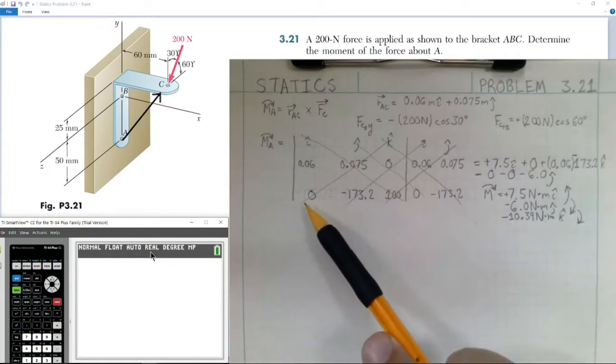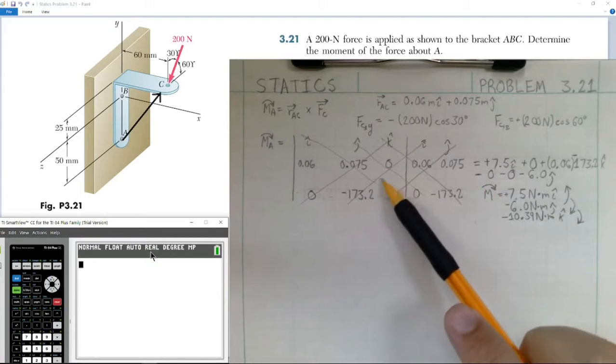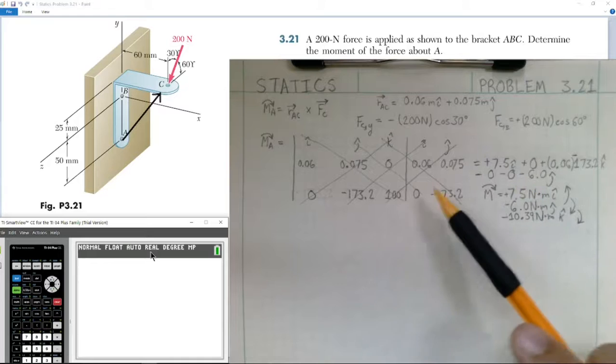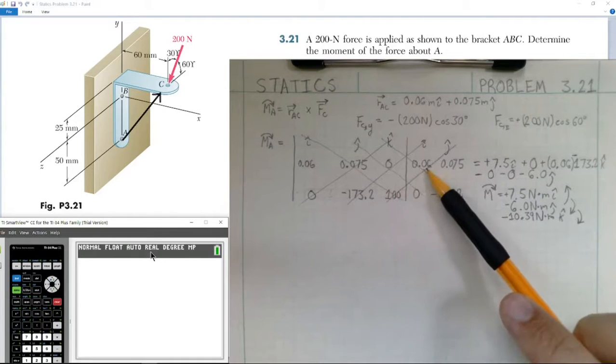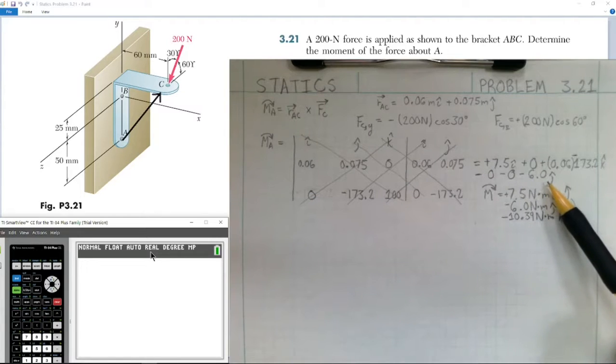Next, going up and to the right, we subtract. We have zero, so minus zero. We have another zero in this product, so we have zero. Then we have 100 times 0.06, which would just become 6. And so we're subtracting, so it's negative 6 in the j-hat direction.